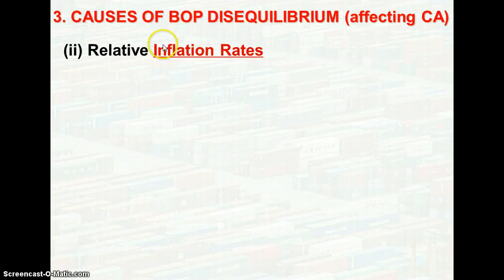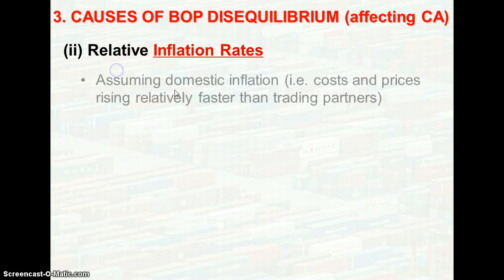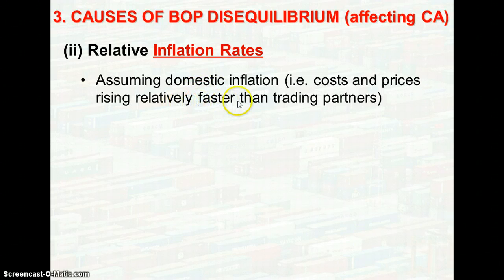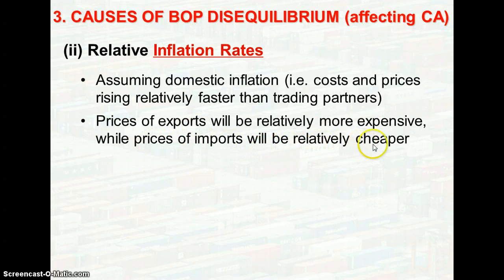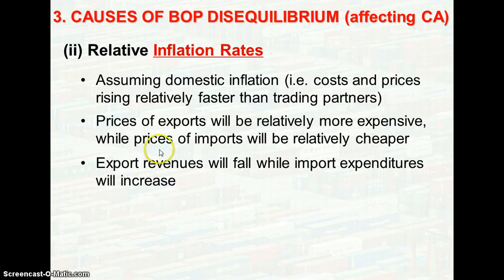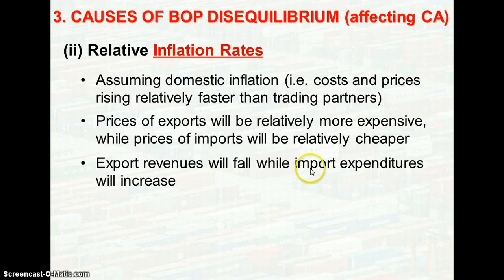The next factor is relative inflation rates. Note the word relative, because we are comparing the increase in price level relative to trading partners. Assuming there is domestic inflation, the prices of exports will be relatively more expensive compared to products in other countries. When the prices of exports become more expensive, there will be a decrease in quantity demanded and hence export revenues will decrease. On the other hand, when imports become cheaper, there will be an increase in imports and therefore import expenditure will increase.